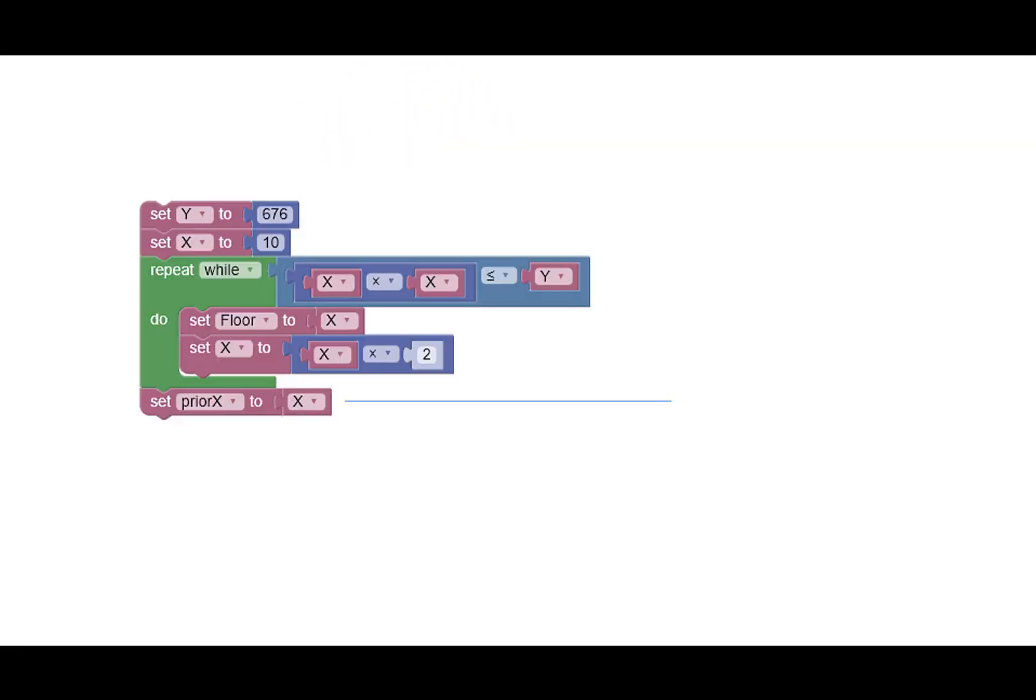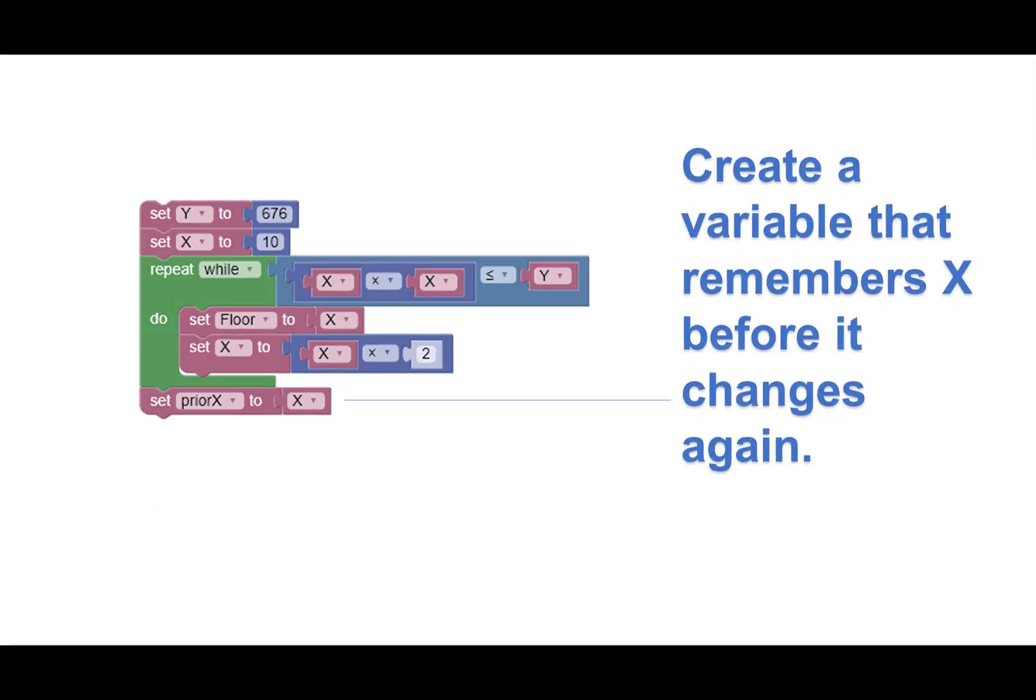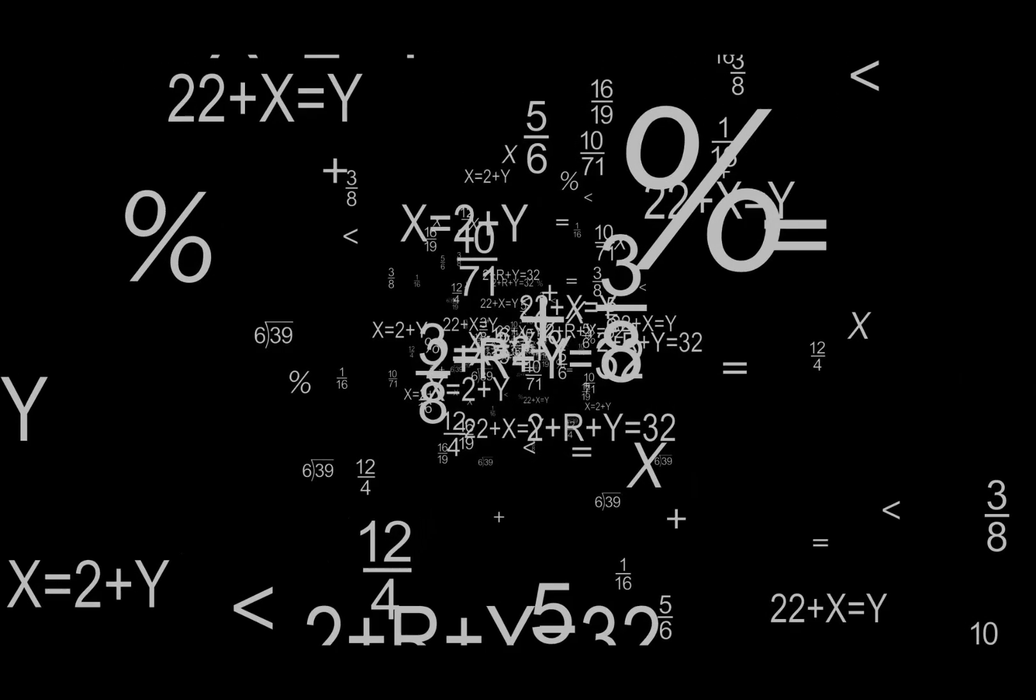Before we add our nifty new function to find the midpoint between the floor and X, we need to create a variable that remembers what X was before it changed. Well, now what?